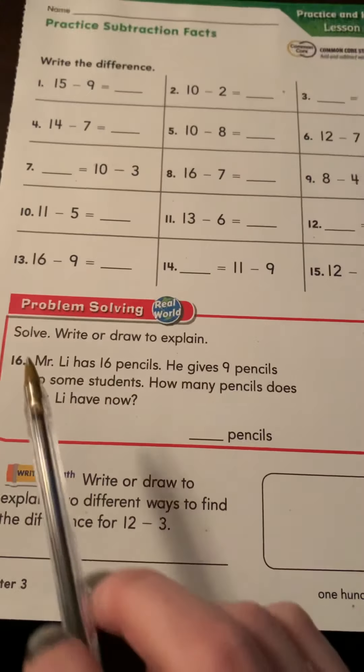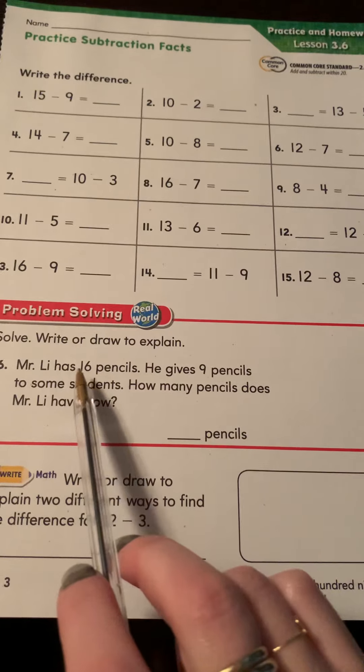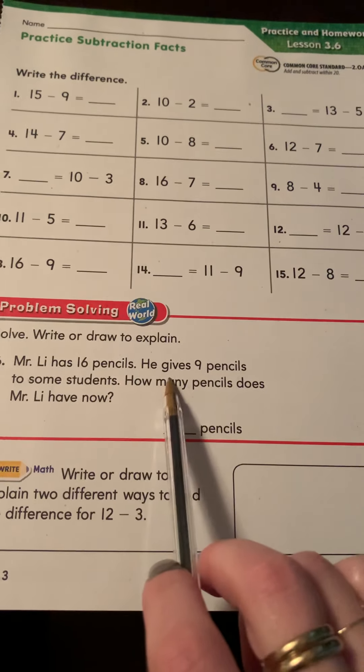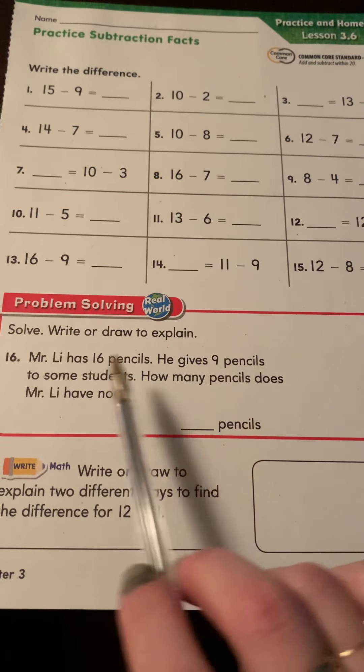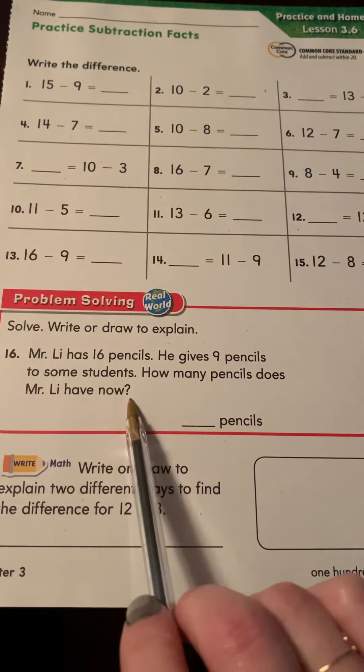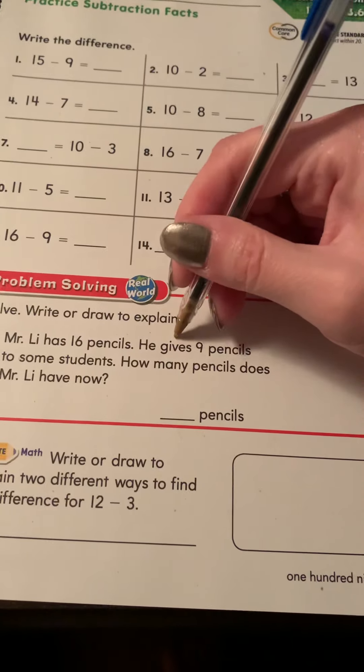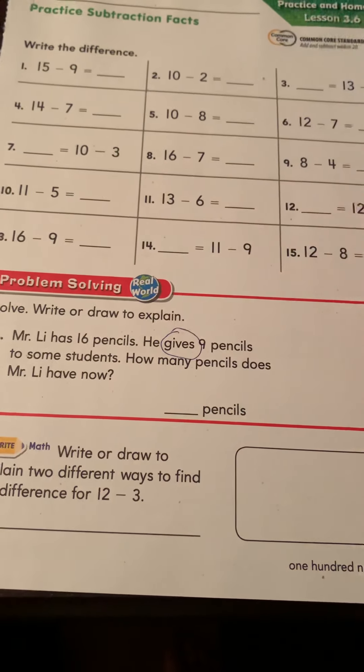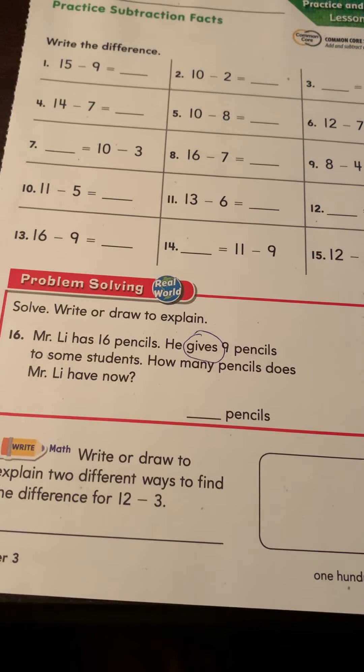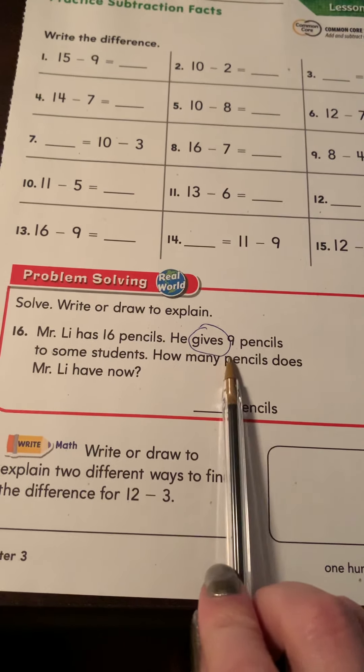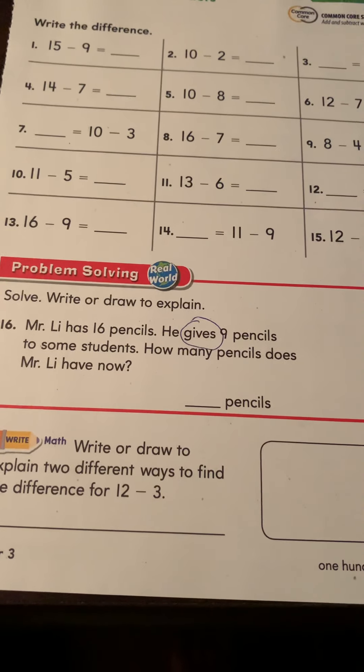We have a word problem here. Mr. Lee has 16 pencils. He gives nine pencils to some students. How many pencils does Mr. Lee have now? I want you to think of this word gives. Someone's giving away their pencils. They're giving them out. Is he adding to his pencil collection or is he subtracting if he's giving these pencils away?